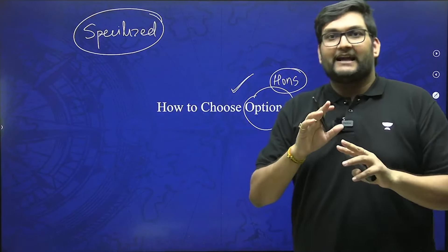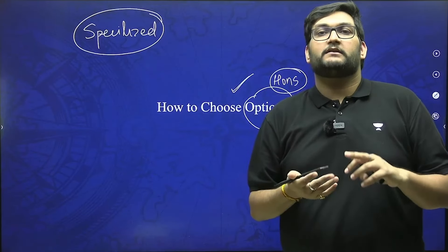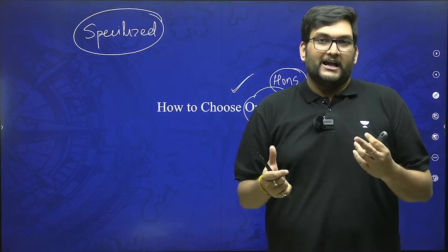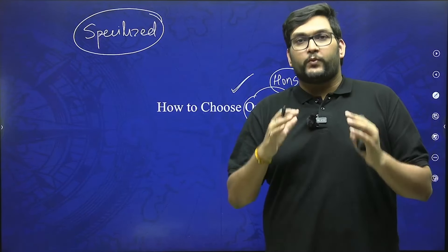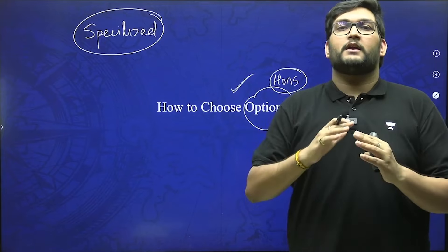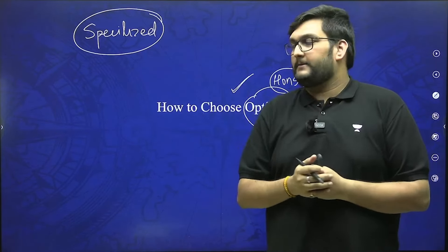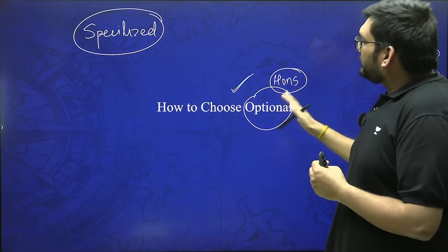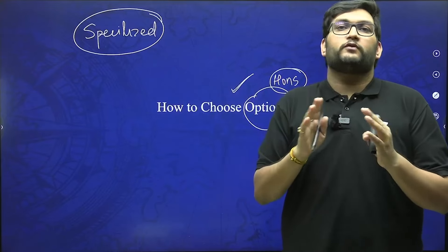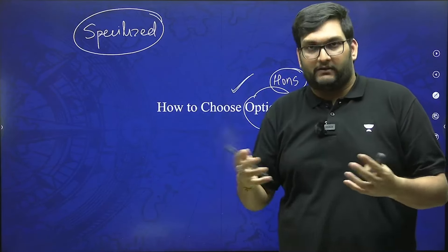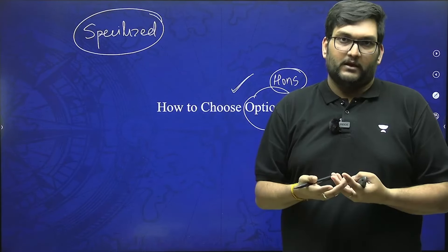The second type of optionals can be done by everybody — generic optionals such as history, PSIR, geography, anthropology, sociology. Here you don't need specific expertise because with a proper guided program you can come to the level to write good answers and clear the examination with a very good rank. History falls into the category where you really don't need to worry whether you have a background or not. As it is, for GS you have to cover the history portion, so this brings us to the intersectionality part.